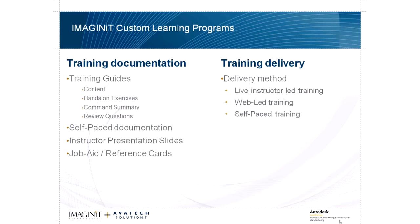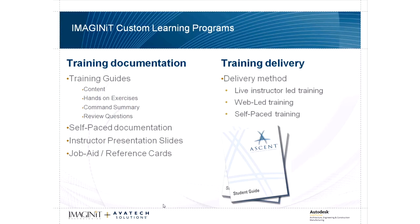A custom learning program is made up of training documentation and training delivery. There are various types of training documentation we can create. The most common and effective documentation is a training guide, which consists of content and hands-on exercises. Training guide content contains the how-to information for a software tool, as well as in-depth explanations of each topic. Hands-on exercises are written to walk a student through practicing a process themselves. Training guides can also include icon and toolbar summaries, as well as review questions.